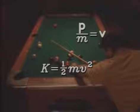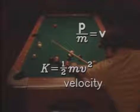Kinetic energy, K, is one-half mass times velocity squared.